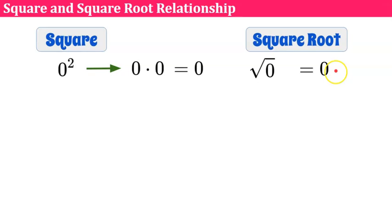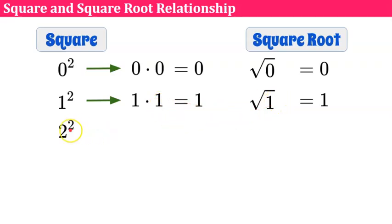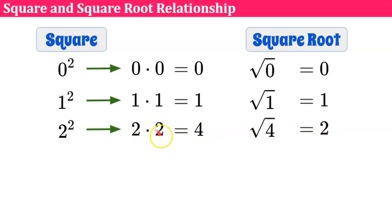One squared is one times one, which equals one. The square root of one is also one, since one times one equals one. Two squared is two times two, which is four. The square root of four is two, because two multiplied by itself is four. So two squared is four and the square root of four is two.